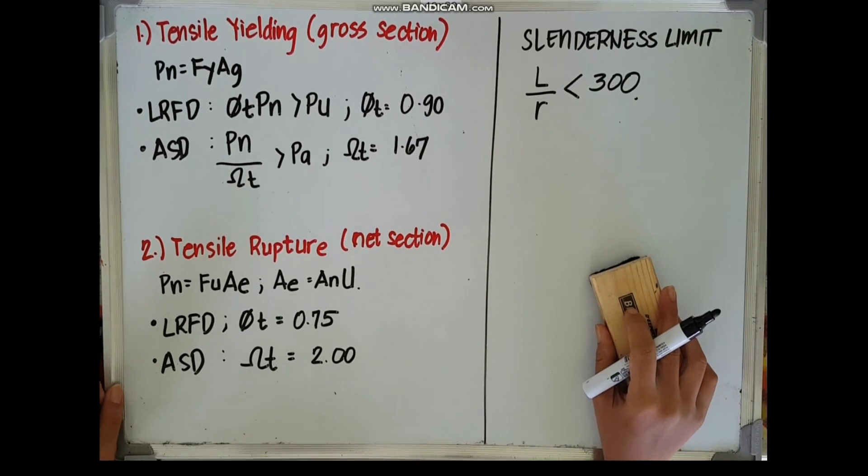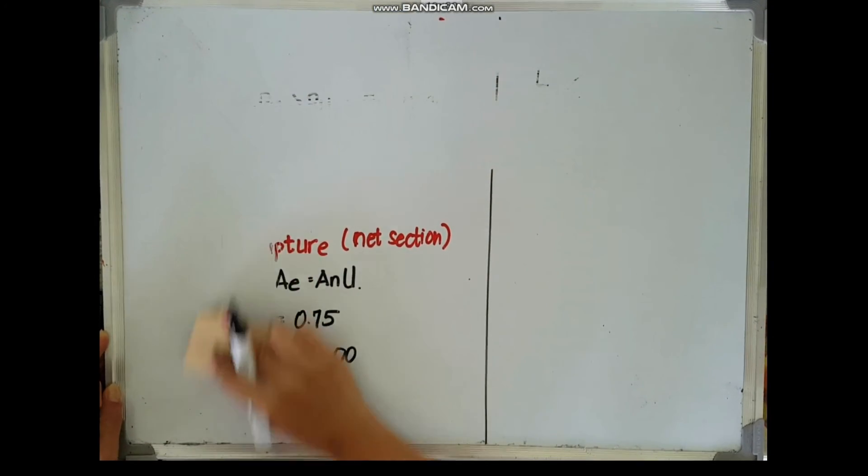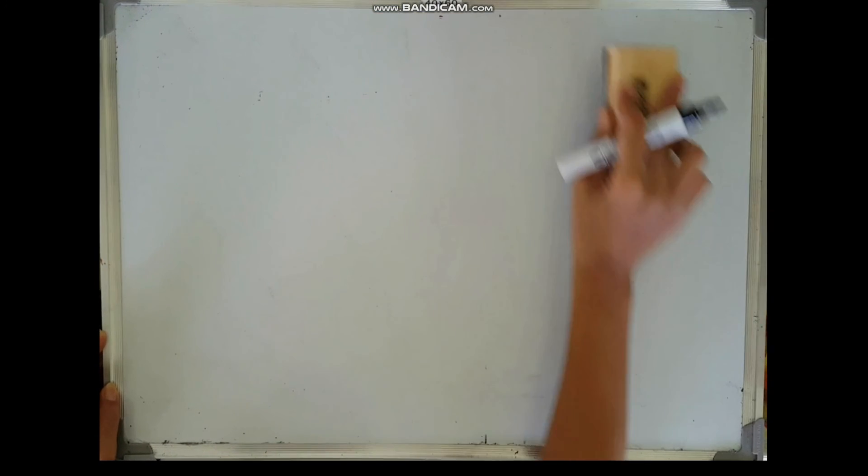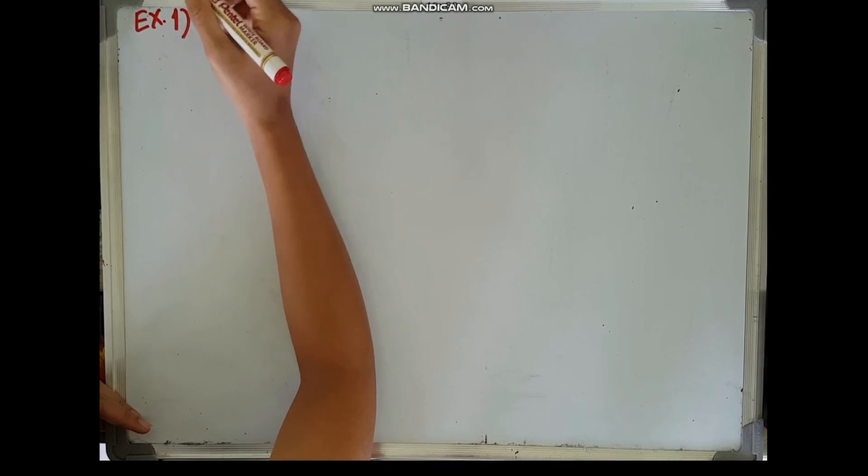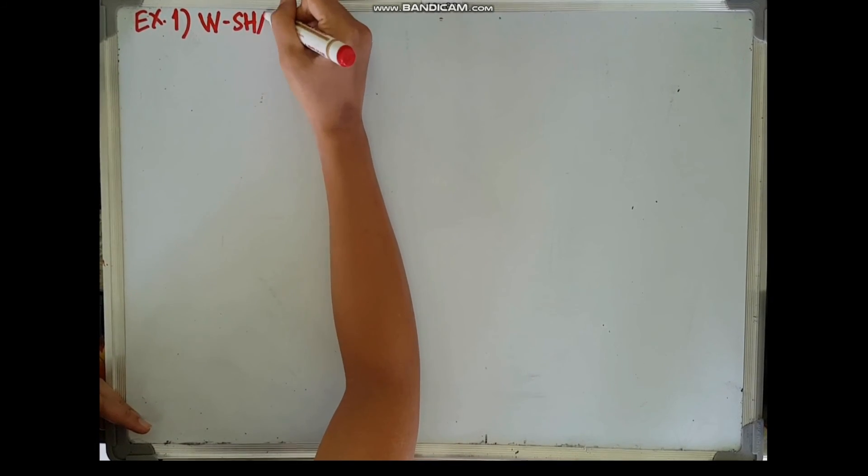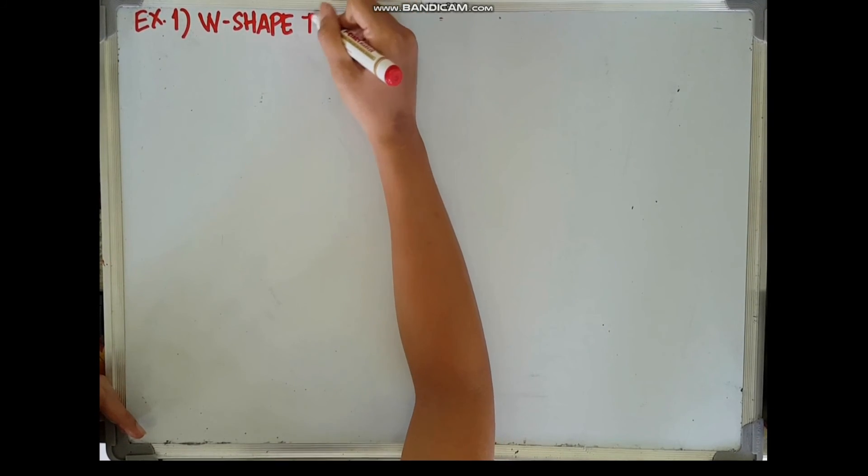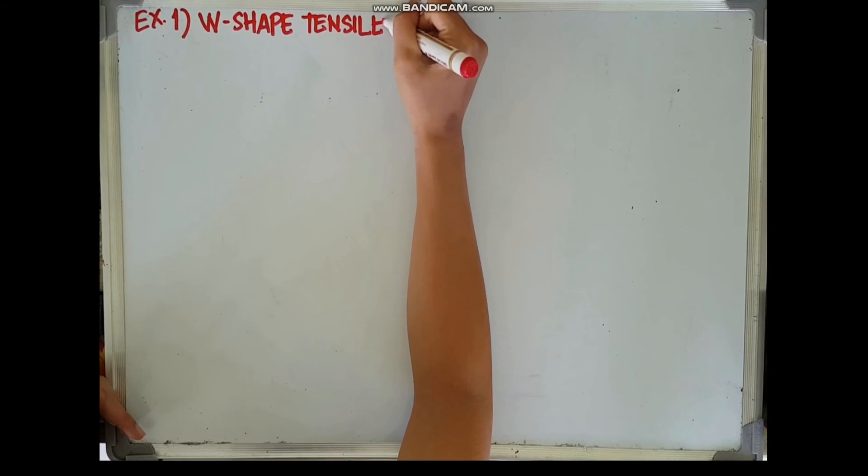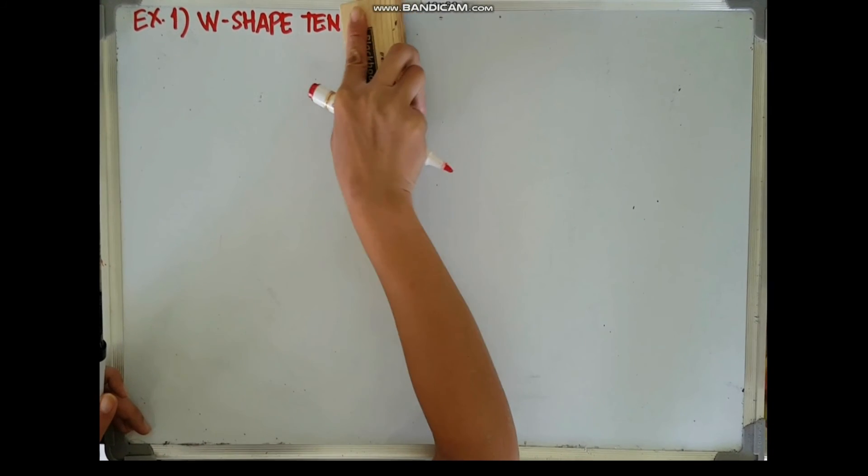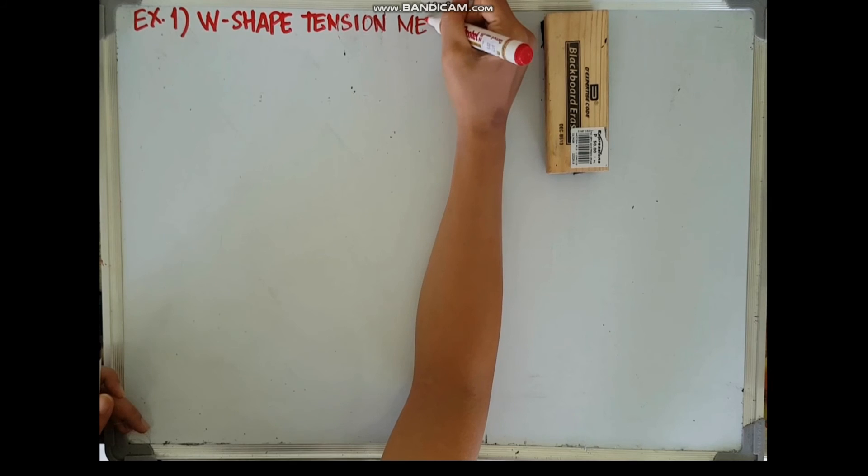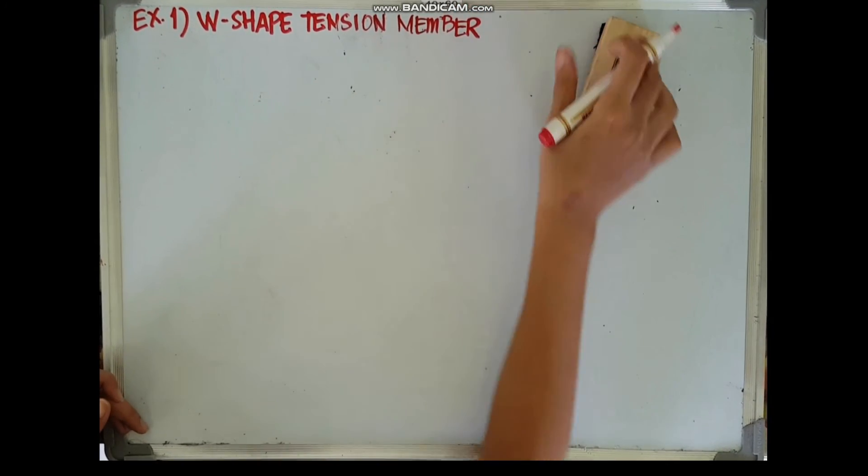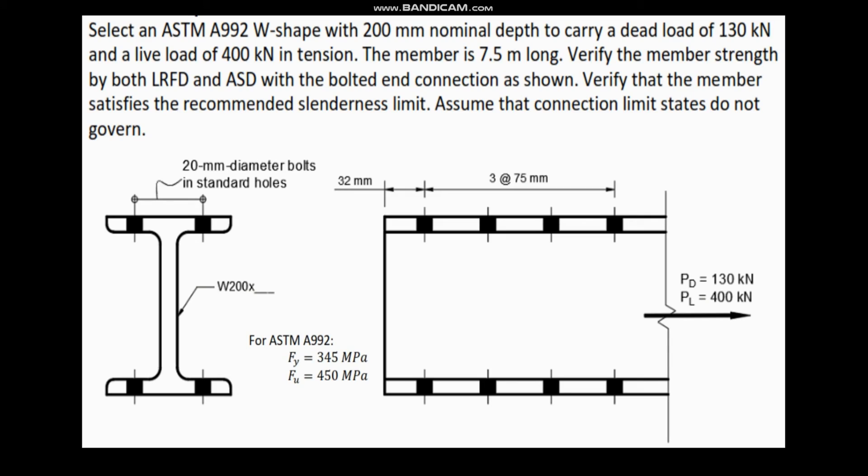So we're now ready to have our first example. We will try to design a W-shape tension member. We will design and we will analyze this member. For our example number 1, select an ASTM A992 W-shape with 200mm nominal depth to carry a dead load of 130kN and a live load of 400kN in tension.